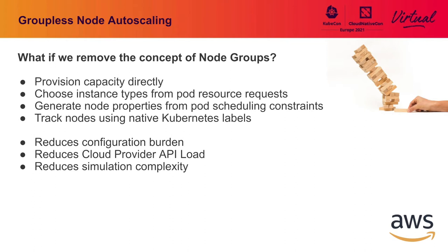Once we've decided what instance we want, we just tell our cloud provider to give us that instance. One value prop of groups is they track nodes so you can roll out a change or delete them all at once. We decided to track nodes using Kubernetes labels, which is more Kubernetes-friendly and native to the other tooling being used. The result is a significantly reduced configuration burden. We've seen customers deploying over 50 ASGs in production — the cross product of instance type, capacity type, availability zone, and scheduling properties — which can blow up quickly. With Karpenter, you don't need any of those; it's all done dynamically.